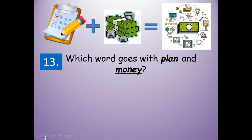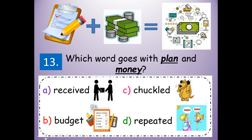Number thirteen: which word goes with plan and money? Would it be received? Budget? Chuckled? Or repeated? Budget — B-U-D-G-E-T. Budget is a plan for money.